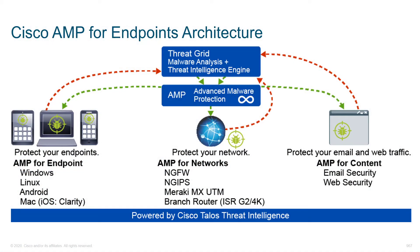Let's take a moment to cover the endpoint architecture. When we look at Cisco AMP for endpoints, there's also Cisco AMP for networks — that's where we deploy the AMP intelligence and connect it into firewalls, IPS, the Meraki MX unified threat management, as well as branch routers.